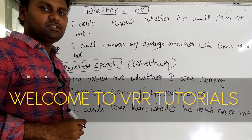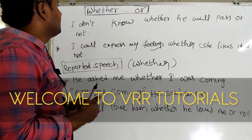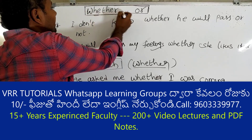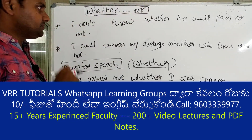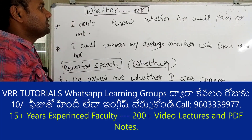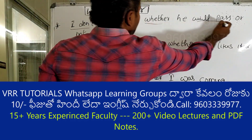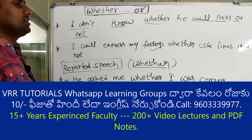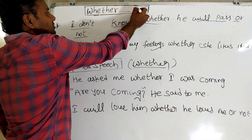Hi everyone, welcome to VRR Tutorials. Today's topic is the use of 'whether' and 'or' in English. The first example is: I don't know whether he will pass or not.